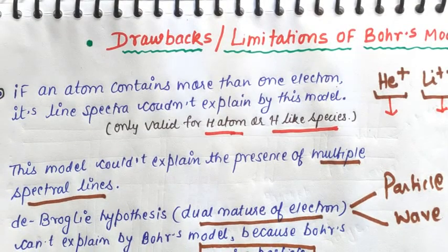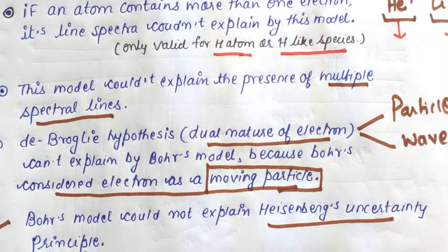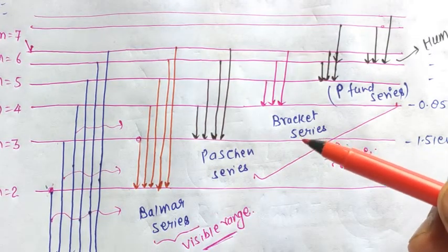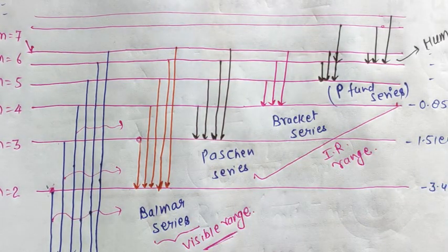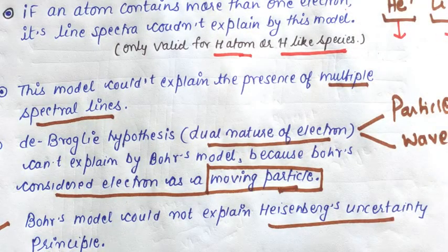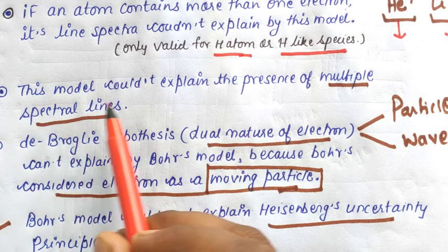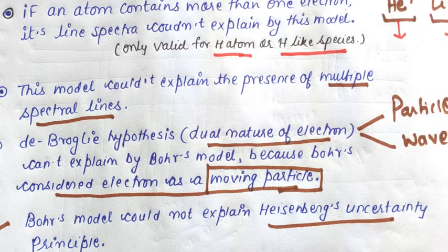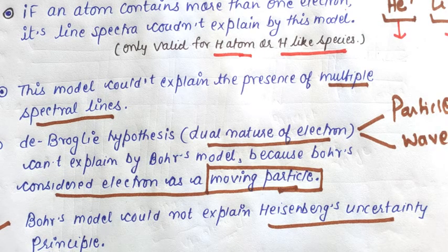This is the first limitation. The second limitation: this model cannot explain the presence of multiple spectral lines. As we can see, there are spectral lines, but under these lines there are also ultra-fine lines — an ultra-fine spectrum. This fine structure also cannot be explained by Bohr's atomic model.